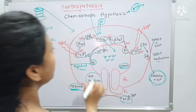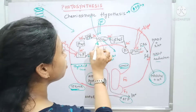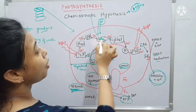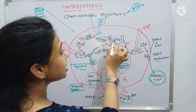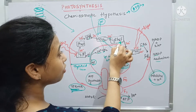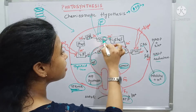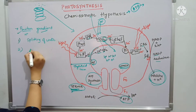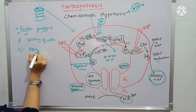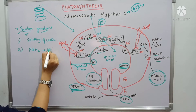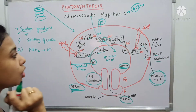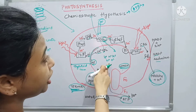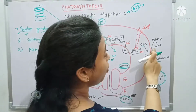To repeat: plastoquinone gets reduced by taking hydrogen from the stromal region. It then releases the electron to cytochrome b6f, and this hydrogen is released inside the lumen. So the second reason for proton gradient formation in the lumen is because of plastoquinone releasing hydrogen ions into the lumen.